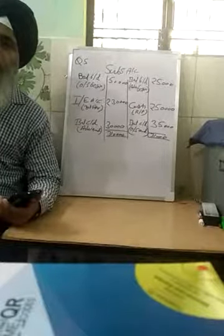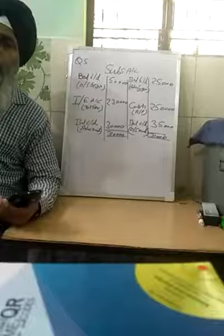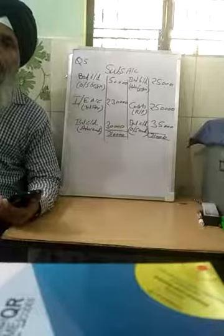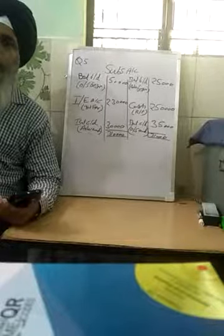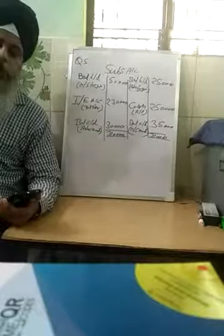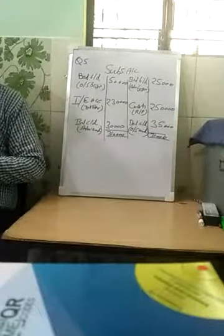There are four adjustments — these are common in every question. Outstanding at end will be plus and outstanding at beginning will be minus. Advanced received at the end will be minus and advanced received at the beginning will be plus.